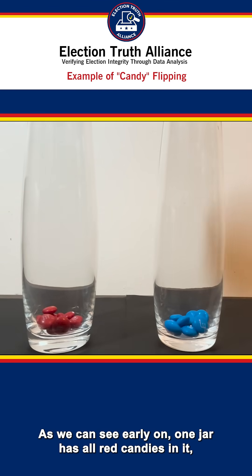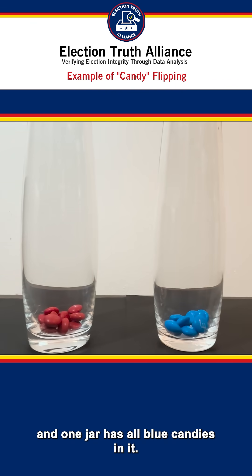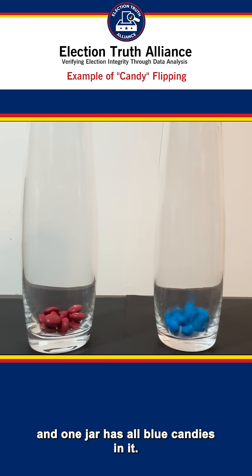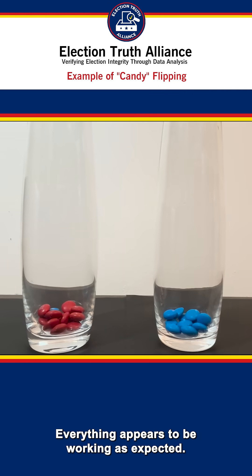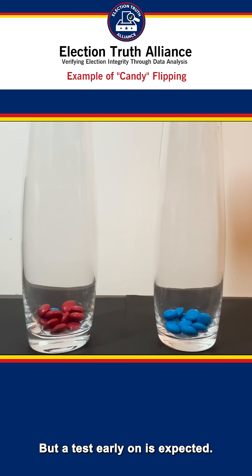As we can see early on, one jar has all red candies in it, and one jar has all blue candies in it. Everything appears to be working as expected, but a test early on is expected.